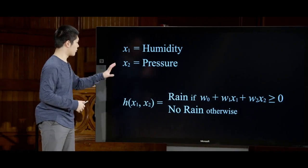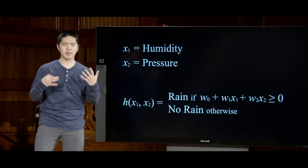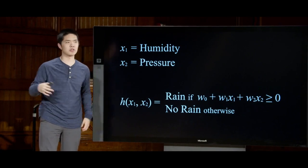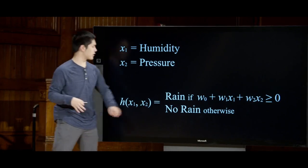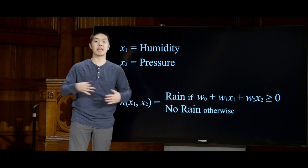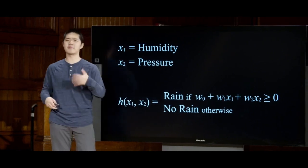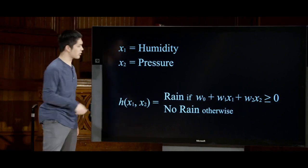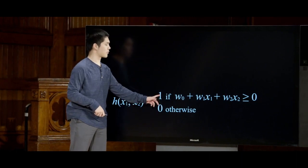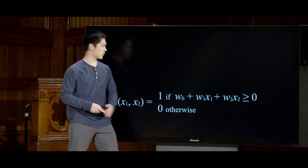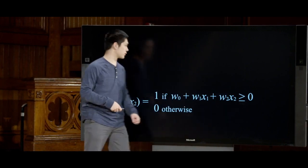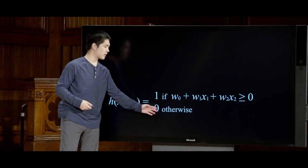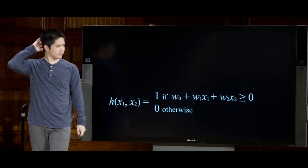To formalize this a bit more mathematically, for these categories we'll sometimes just use the names rain and not rain. But mathematically, it's easier to deal in the world of numbers — so we could say 1 for raining and 0 for not raining. We do all this math, and if the result is greater than or equal to 0, our hypothesis function outputs 1, meaning raining; otherwise, it outputs 0, meaning not raining.